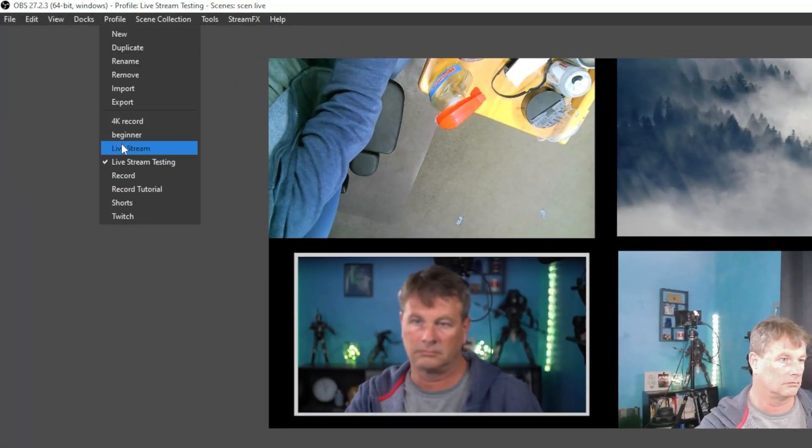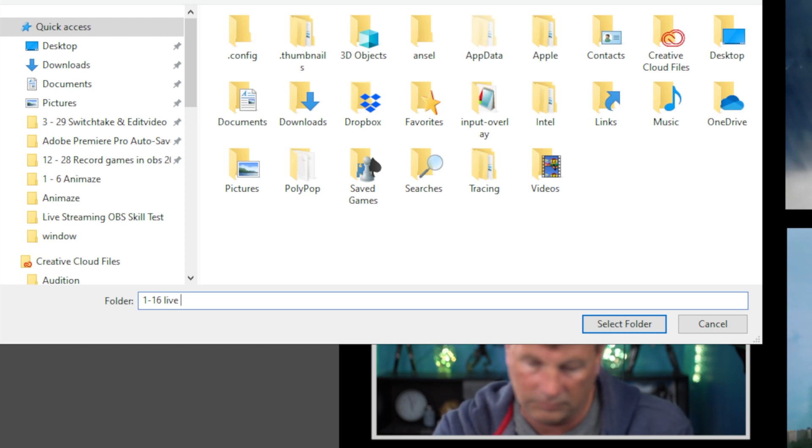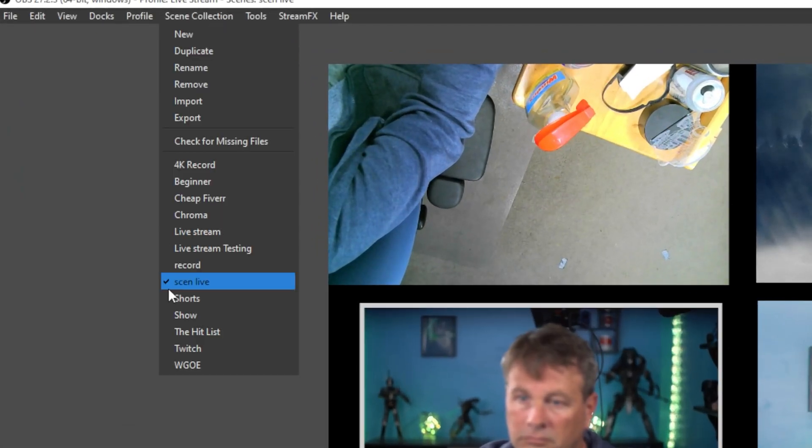So just click on profile, be sure the correct one is selected, and click on export. Name our profile to export, and usually I use the date so I know exactly when I saved this from. Then I do the same thing with my scene collections.